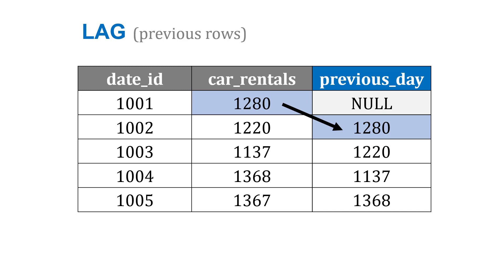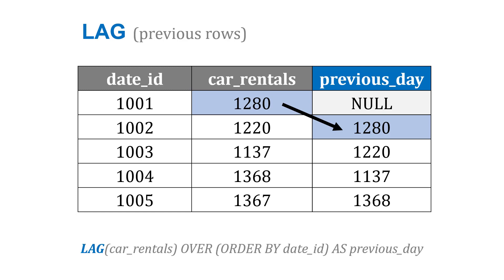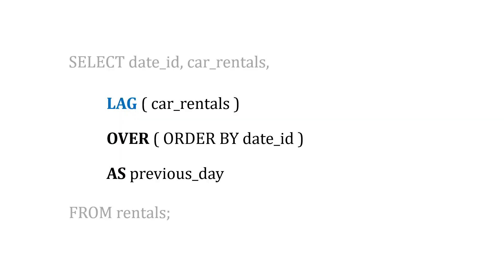The way that I would write a lag is I would say lag car rentals — that's the second field — over order by the date ID. I want the dates in the right order so I choose the proper previous day, and then I say as previous day because that's what I want the third field to be named. Here's what the lag looks like inside the select statement: select date ID and car rentals as the first two fields, and the third field is lag car rentals over order by the date ID, so I have the dates in the proper order from first day to the last day, as previous day.